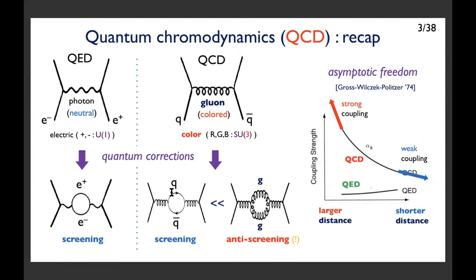In QED, the photon exchange is screened by electron-positron pairs, so the force at long distance becomes weaker due to screening. In QCD, there is also a screening effect — the gluon is screened by quark-antiquark pairs — but there is also an anti-screening process. Gluons couple to other gluons, so the interaction becomes stronger and stronger at longer distance. Therefore, QCD has strong interaction at low energy and long distance, becoming weaker at short distance. This is the celebrated asymptotic freedom.